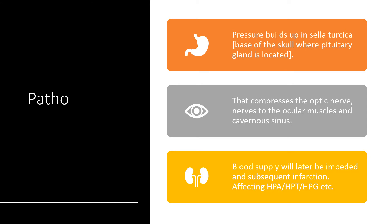That pressure will then compress the optic nerve, the nerves to the ocular muscles, and the cavernous sinus. By the time I'll be going through clinical features, you'll understand this better. The blood supply will later be impeded and there will be subsequent infarction affecting the hypothalamic-pituitary-adrenal axis, hypothalamic-pituitary-thyroid axis, hypothalamic-pituitary-gonadal axis, and other axes and so on.